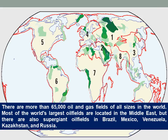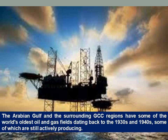There are more than 65,000 oil and gas fields of all sizes in the world. Most of the world's largest oil fields are located in the Middle East, but there are also supergiant oil fields in Brazil, Mexico, Venezuela, Kazakhstan, and Russia. The Arabian Gulf and the surrounding GCC regions have some of the world's oldest oil and gas fields dating back to the 1930s and 1940s, some of which are still actively producing.